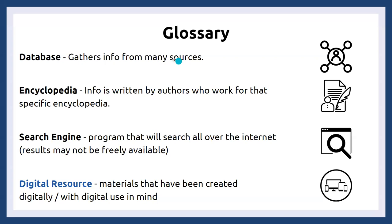The main difference between databases and encyclopedias is that a database gathers its information from many different sources. Whereas an encyclopedia — the information stored in it is written by authors who work for that specific encyclopedia. When I say encyclopedia, I'm referring to a reference work containing information on all aspects of knowledge relating to a specific subject. For example, a medical encyclopedia would have articles written by its authors but would only contain info related to treatment of illness and injuries — not graphic novels or book clubs.